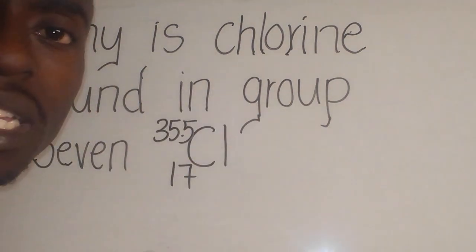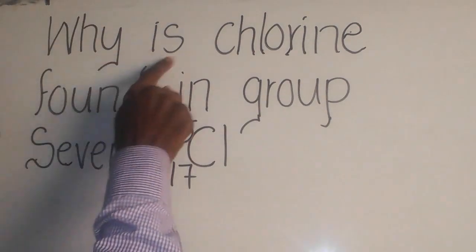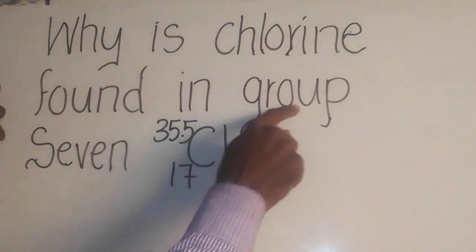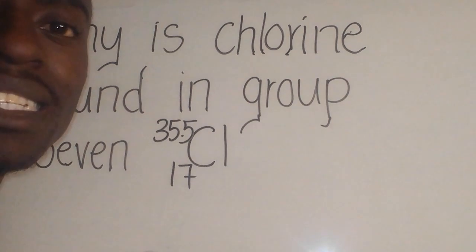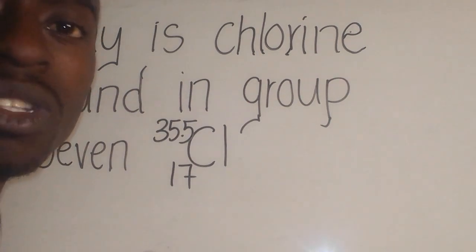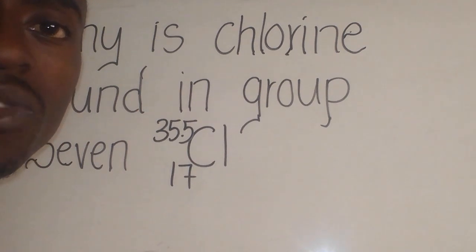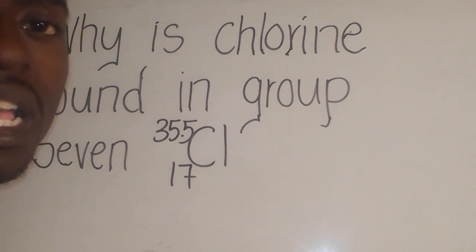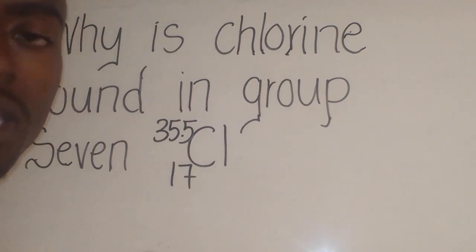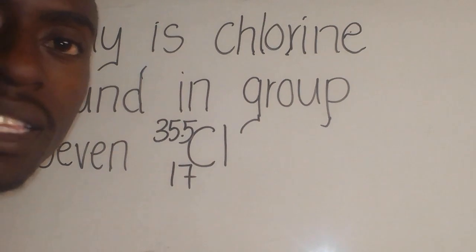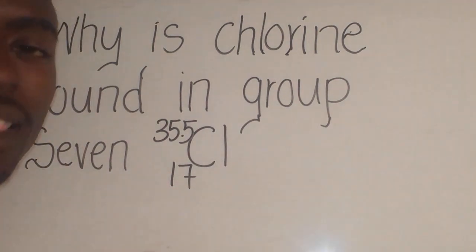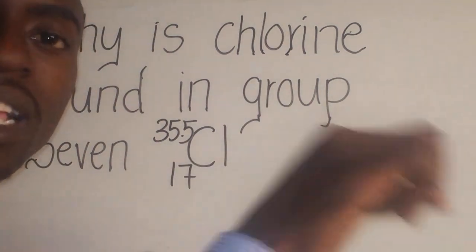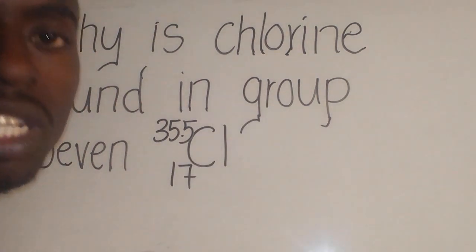Following our question — why is chlorine found in group 7? — it is because chlorine has 7 outermost electrons in its energy level or shells. If you want to prove it, you can just write the electron configuration for chlorine, and you will see that at the end there will be 7, which represents the number of electrons in the outermost shell.